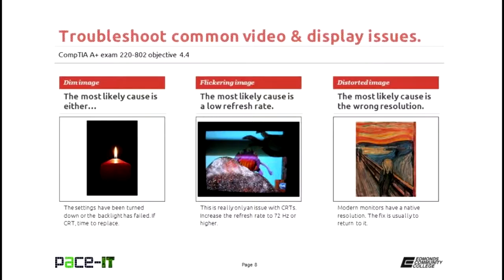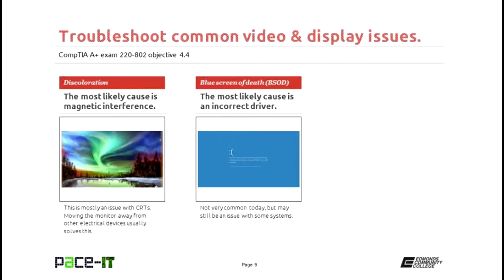Distorted image means you have the wrong resolution. All modern flat panel displays have a native resolution. Displaying your image in something other than the native resolution may cause distortion of your screen — go back to the native resolution. It's the best one; it's what the monitor was designed for.